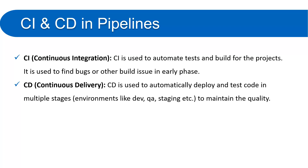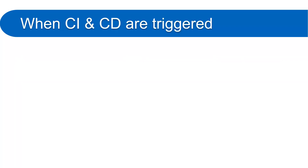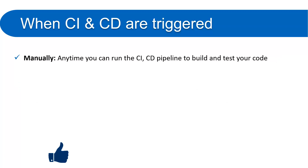When working on a project you have multiple stage work environments: developer environment, QA environment, staging environment, and finally production environment. Continuous Delivery is used to deploy your code one by one to different targets, with or without permissions, as per the settings you define in the pipelines. CI is used to build and test your code, and CD is used to deploy it. You can trigger CI and CD manually at any time.